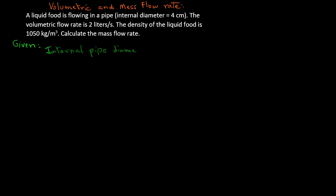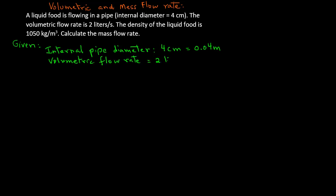The given items are: internal pipe diameter is four centimeters, which we convert to SI units — for length we always use meters — so four centimeters is 0.04 meters. The volumetric flow rate is two liters per second; since one cubic meter has 1000 liters, we convert that to 0.002 cubic meters per second. The density is 1050 kilograms per cubic meters.